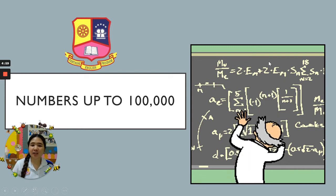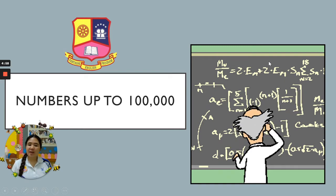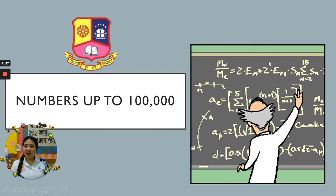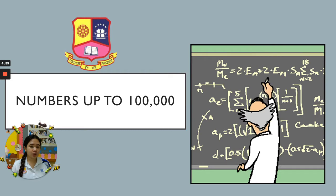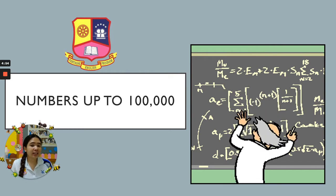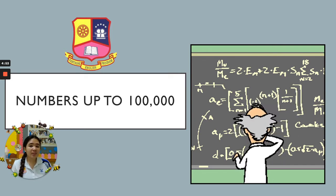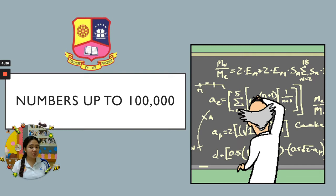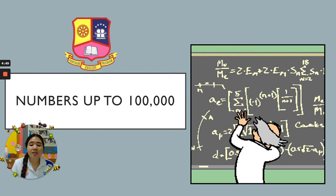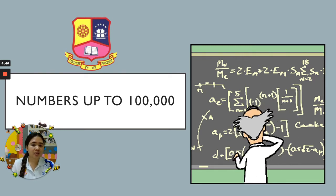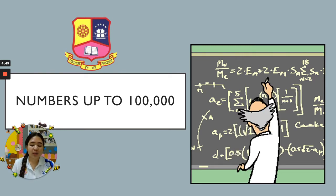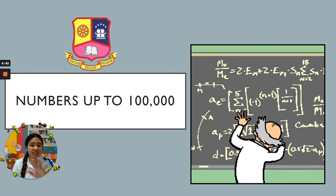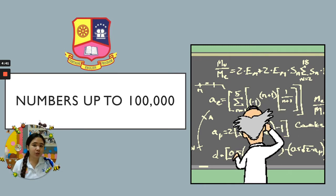Good morning, everyone. I am Teacher Joseph, and I am your math teacher. Today is our seventh day of our math class with the topic Numbers Up to 100,000. Get your books and open to page 6, letter D.